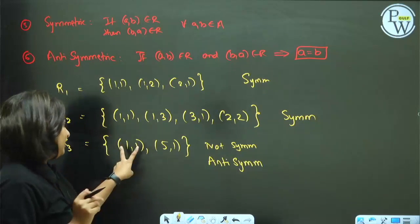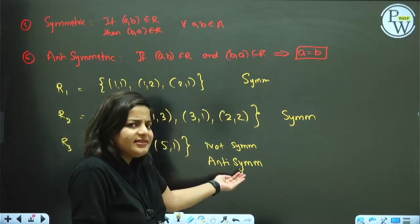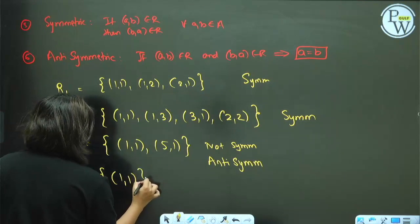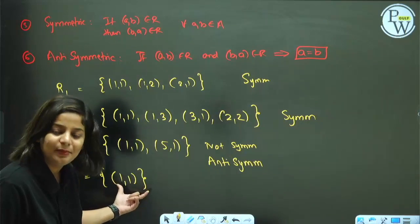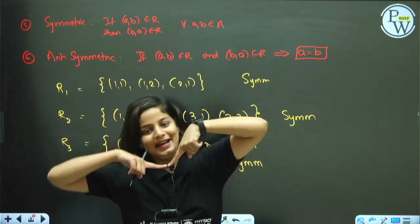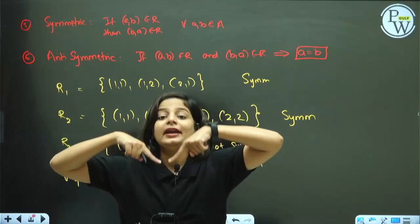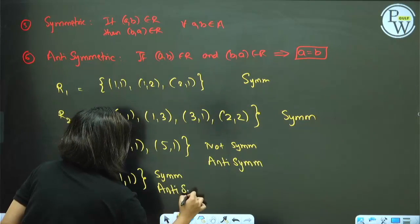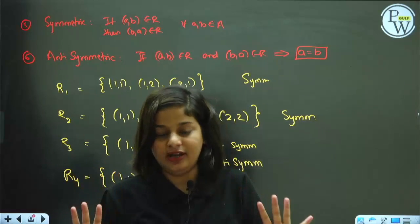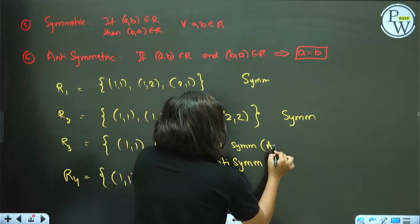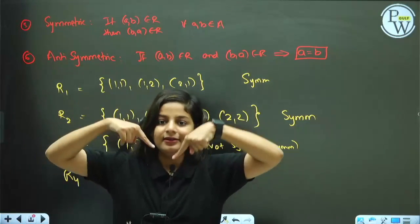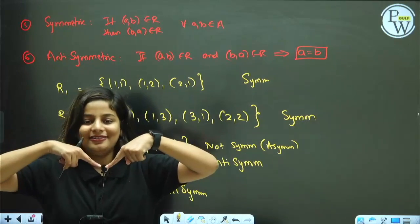People get confused that if it is anti-symmetric it should not be symmetric. That's not always the case. For example, if your relation is just {(1,1)}: is it symmetric? Yes — (1,1) is there and (1,1) is there, happy. Is it anti-symmetric? Yes — (1,1) is there, 1 equals 1, so anti-symmetric. It can be both symmetric and anti-symmetric. Do not confuse — symmetric and anti-symmetric are not opposites. Symmetric and asymmetric are opposites. Anti-symmetric means: if both (a,b) and (b,a) are there, then a equals b.